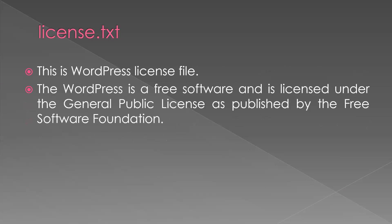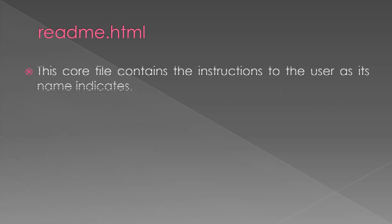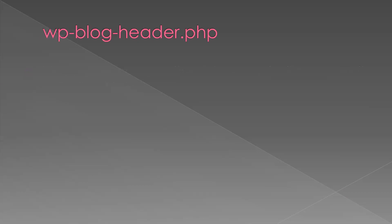license.txt is the file where the WordPress license is stored. WordPress is free software licensed under the General Public License as published by the Free Software Foundation. Next is readme.html — these core files contain instructions to the user. As its name indicates, if you are installing WordPress for the first time, you can check this file for instructions.